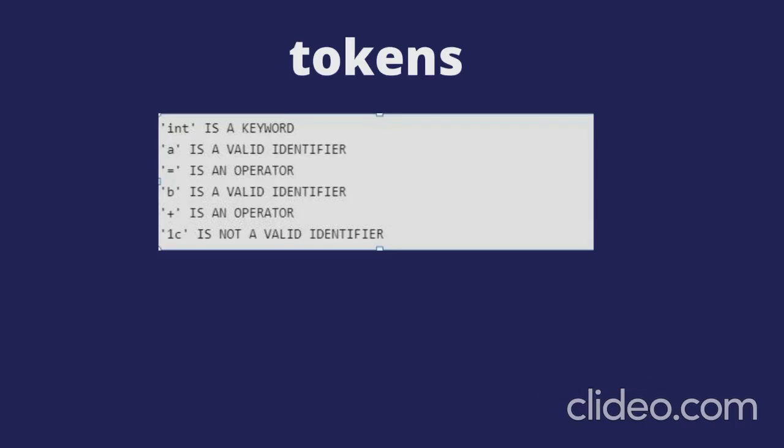Here is an example of tokens. 'int' is a keyword. 'A' is a valid identifier. '=' is an operator. 'B' is a valid identifier. '+' is an operator. '1C' is not a valid identifier. Here is the output of our program — we checked the condition that an identifier must start with a letter, not a number.